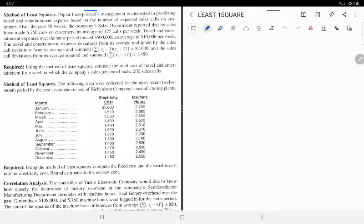Hello students, we are going to solve the method of least squares for Poplar Industries. The first thing we need to know is what is required, and the required will be the travel and entertainment cost for one week estimated.